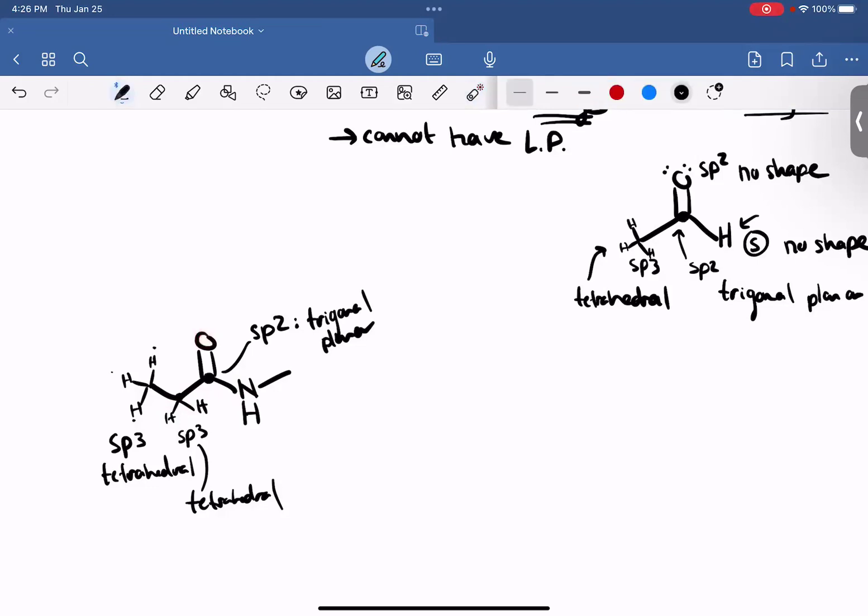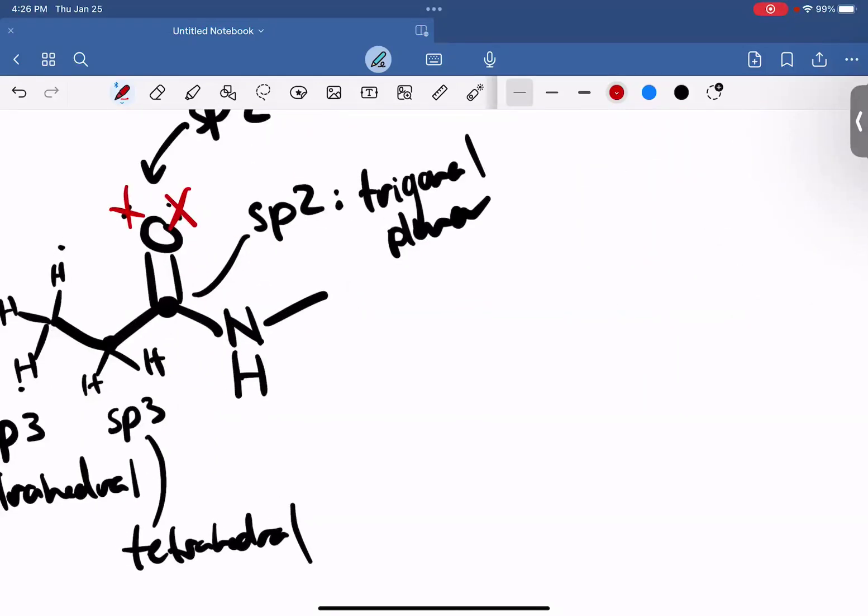What about this oxygen up here? Well, similar to the problem we just did, there is one, two, three. It is SP2 hybridized. Does that mean it's trigonal planar? No, because there's lone pairs there. It's not bonded to three individual things. It's bonded to a carbon and nothing else. So it's SP2, but there's no shape.